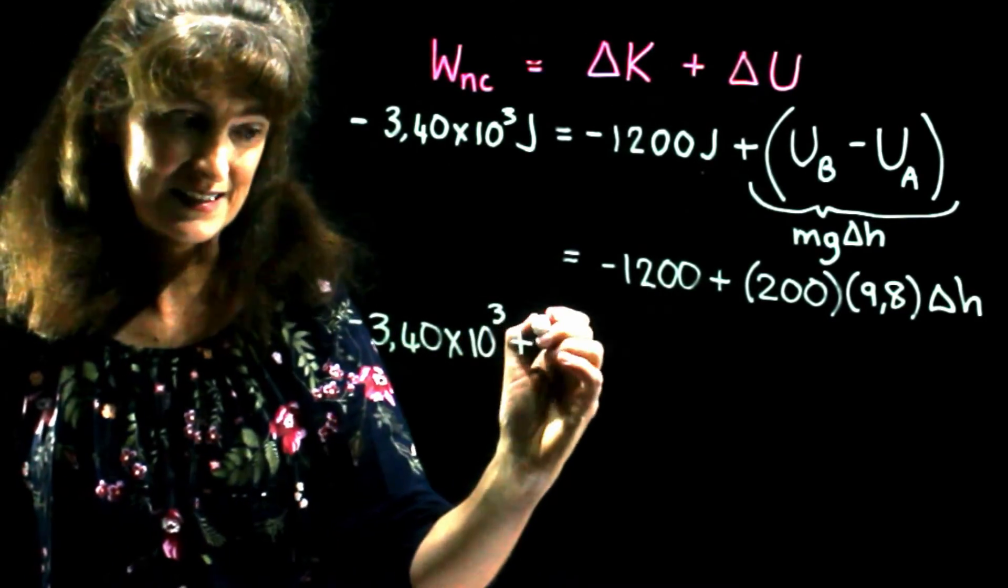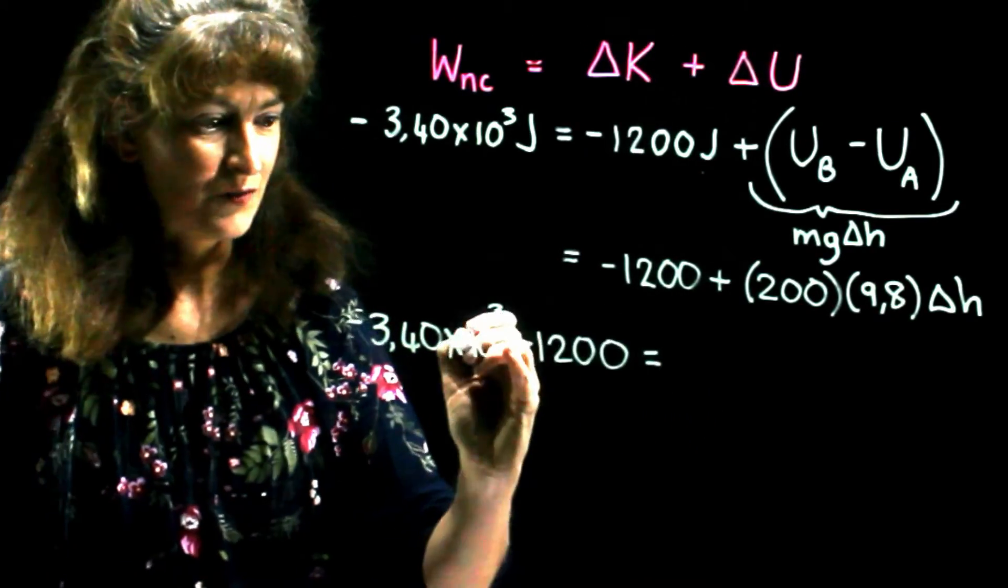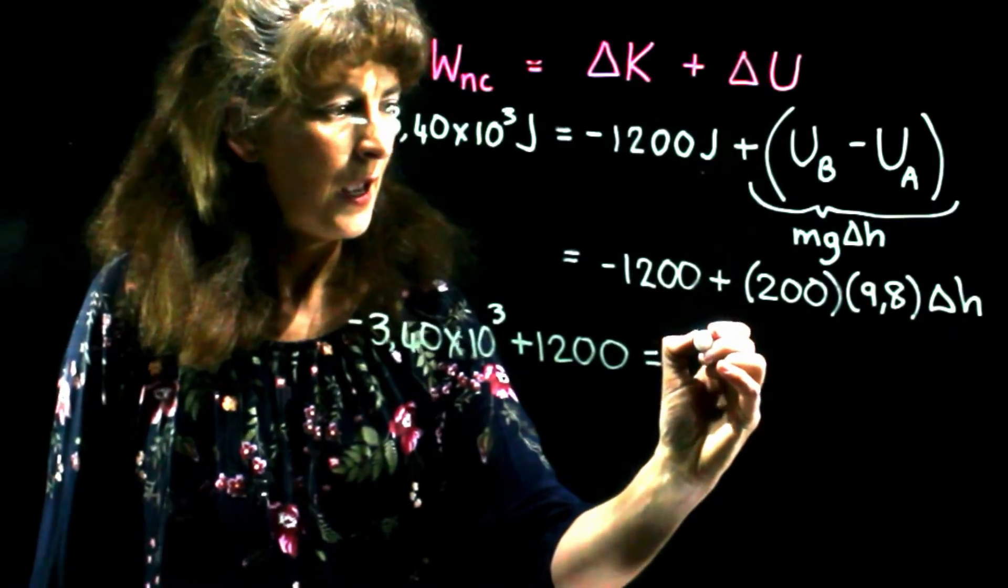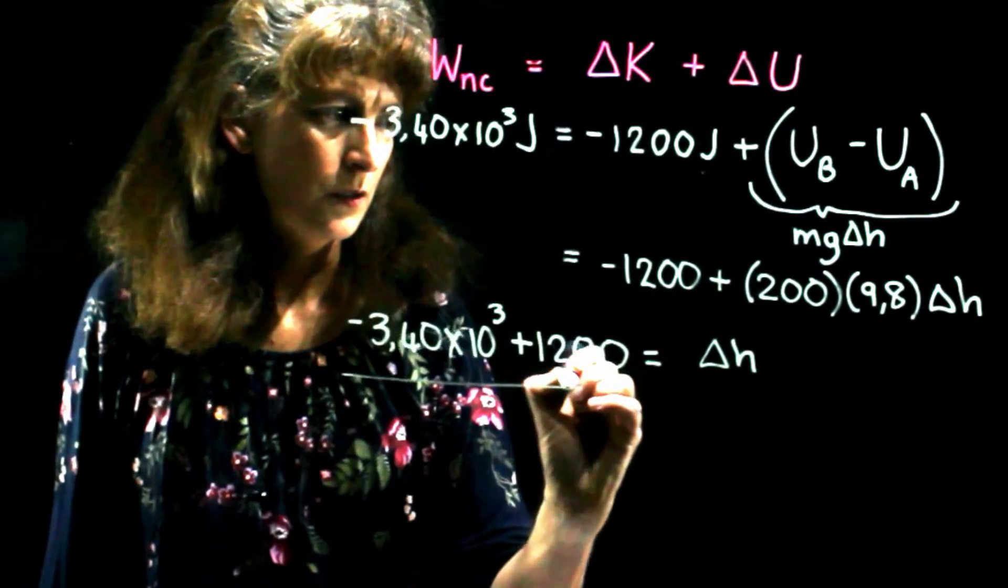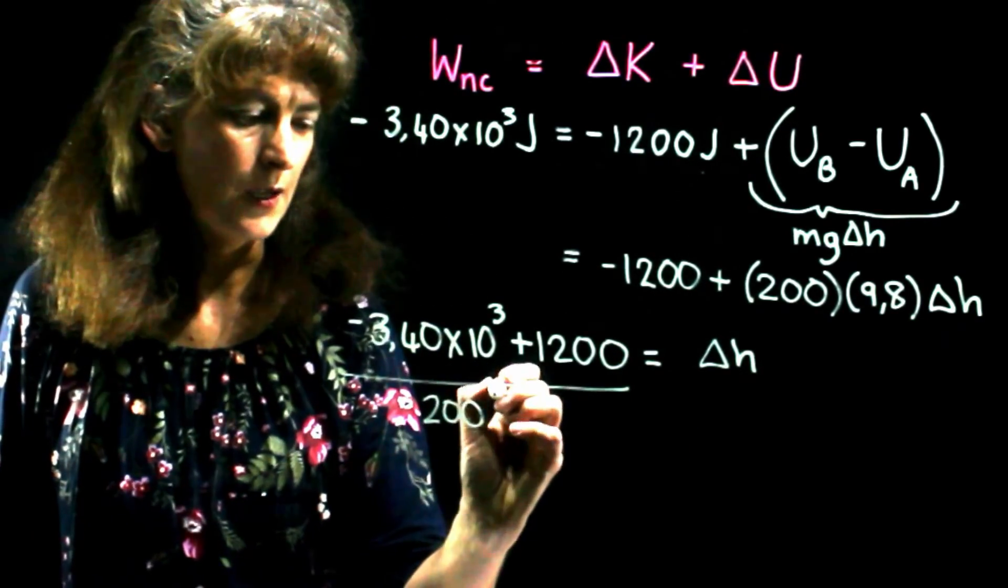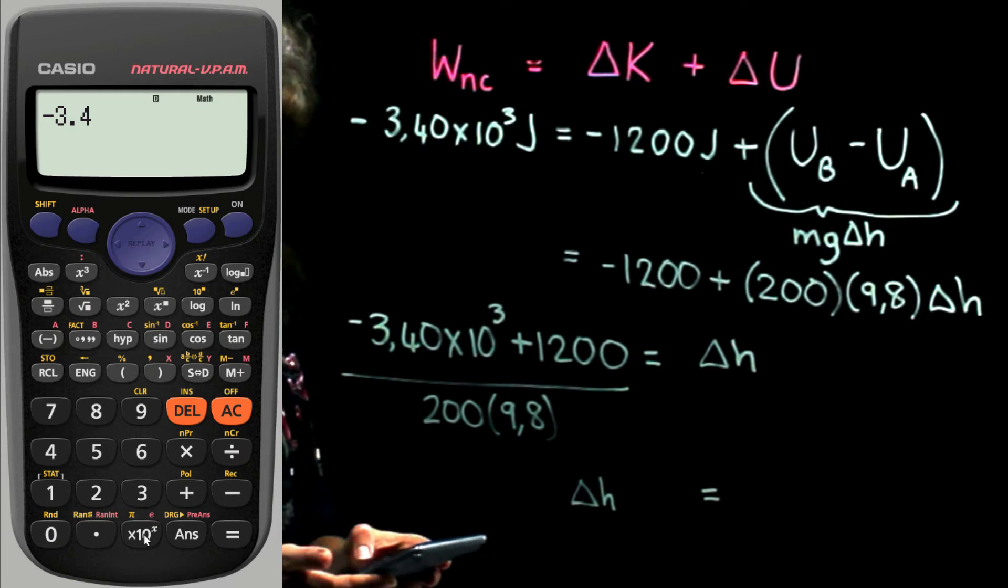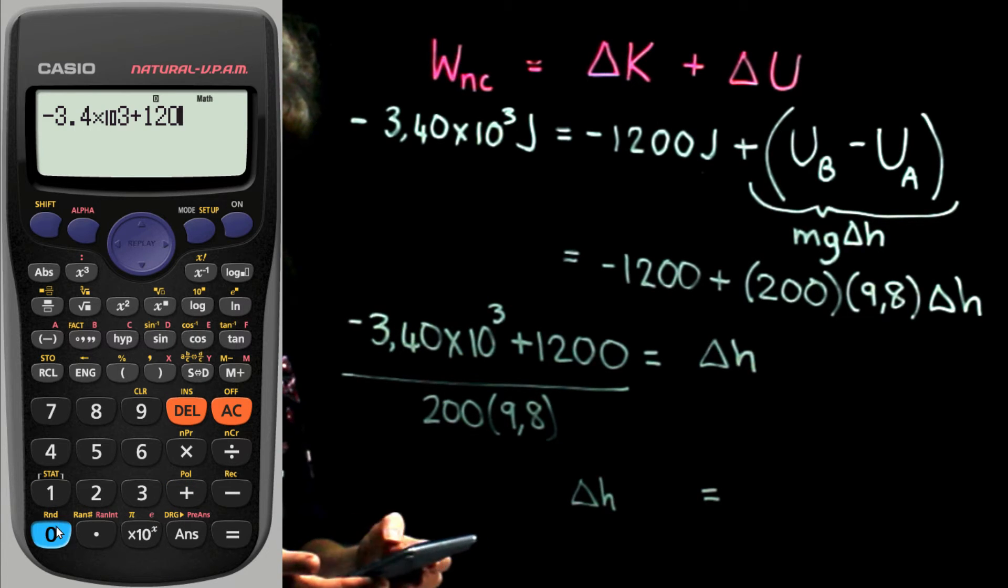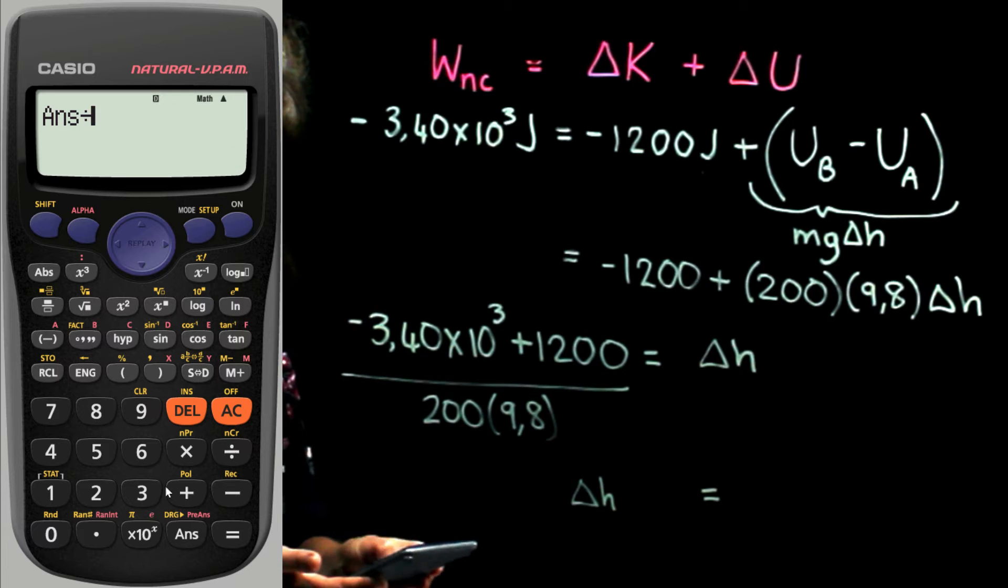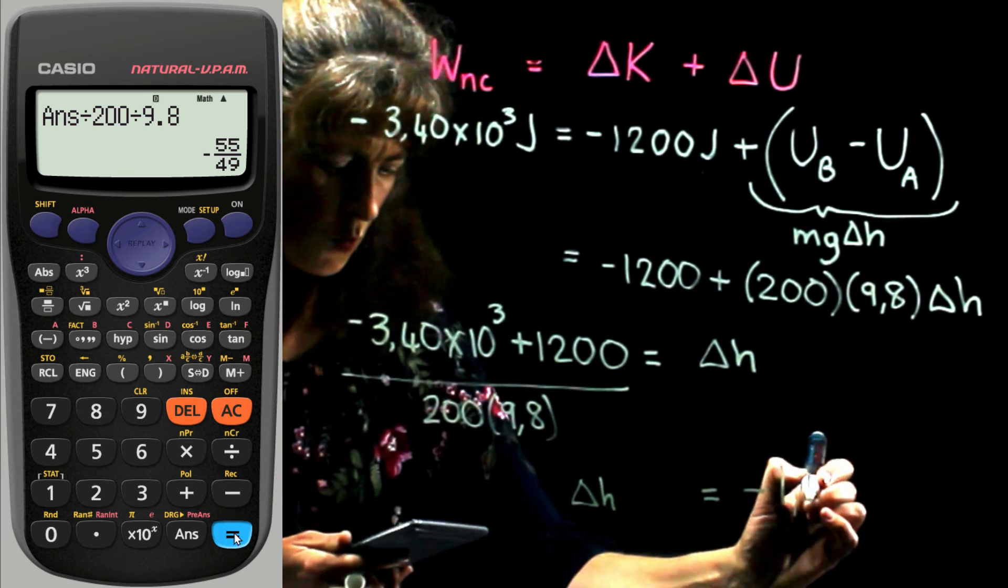Notice, plus 1,200. You must be careful with your algebra. It's very easy to get your signs wrong. And I'm just going to immediately divide through by 200 times 9.8 minus 3.4 times 10 to the power 3 plus 1,200 divide by 200 divide by 9.8 equals minus 1.12.